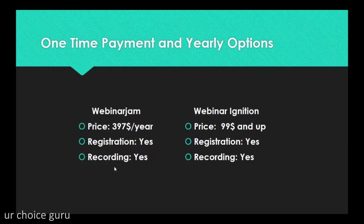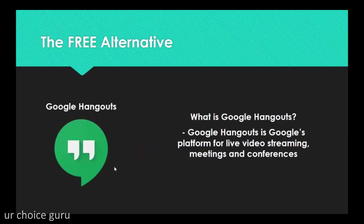WebinarIgnition, on the other hand, costs a $99 one-time fee and comes in three or four different versions. It's based on Google Hangouts, which we will talk more about in this course. It has registration, recording, awesome landing pages, and some promotional apps integrated since it's also marketing-oriented. Now we have the free alternative — this is what we will use to create our free webinar platform: Google Hangouts. Google Hangouts is Google's platform for live video streaming, meetings, video calls, web conferences, and team collaboration.